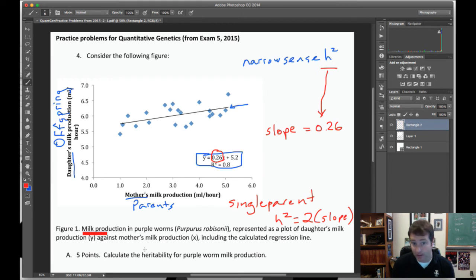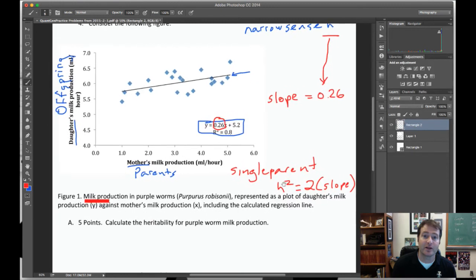If it's a mid-parent regression, or you use the average of both parents, then the heritability is equal to the slope. So if we scroll down a little bit here,